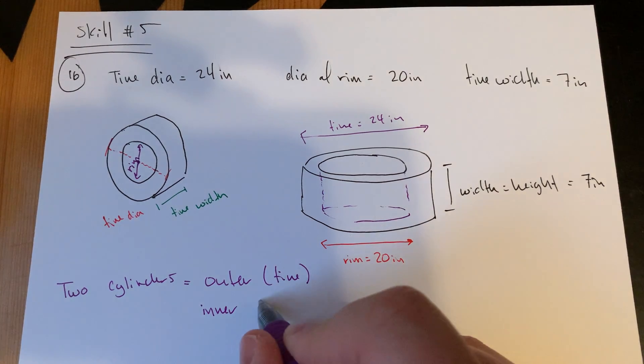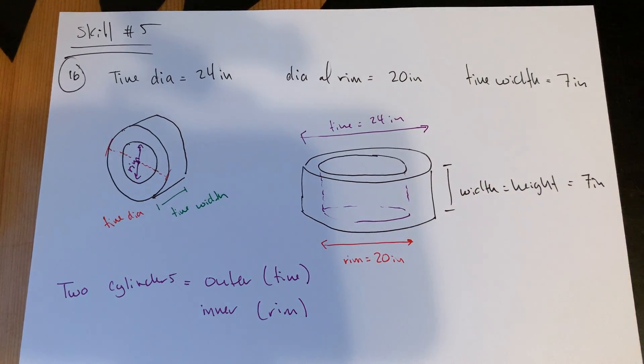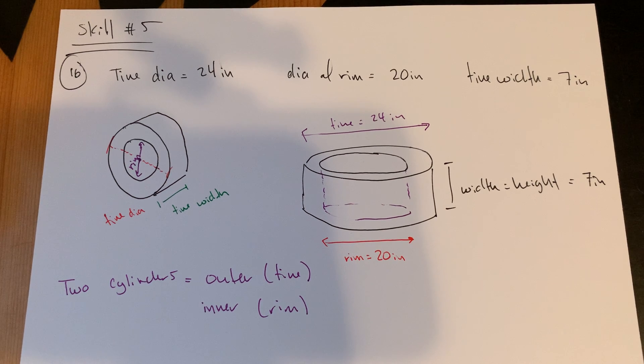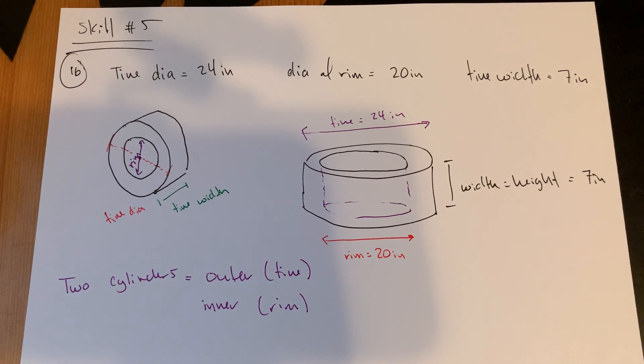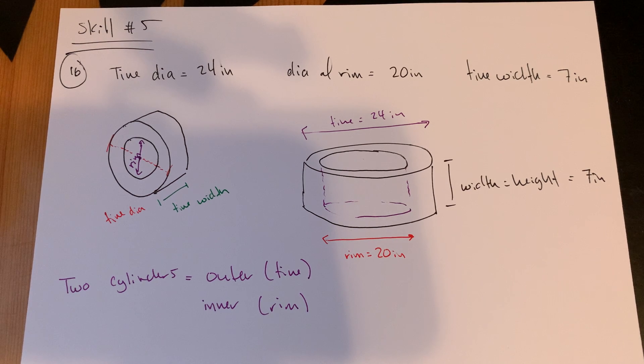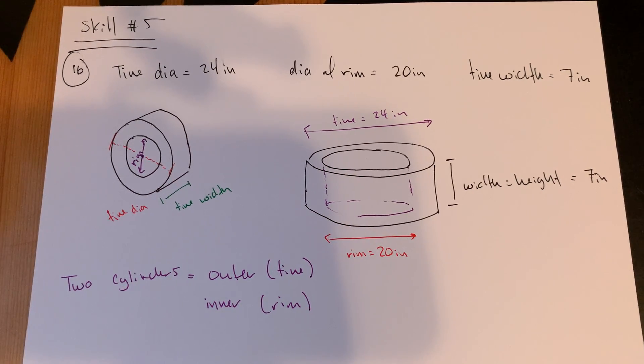There's an outer one which is from the edge of the tire to the tire, and then there's an inner one which is the volume taken up that is covered by the rim. So this is an inner and an outer cylinder, and they both have what would be the same height, which is essentially our width of the tire, which is 7 inches.